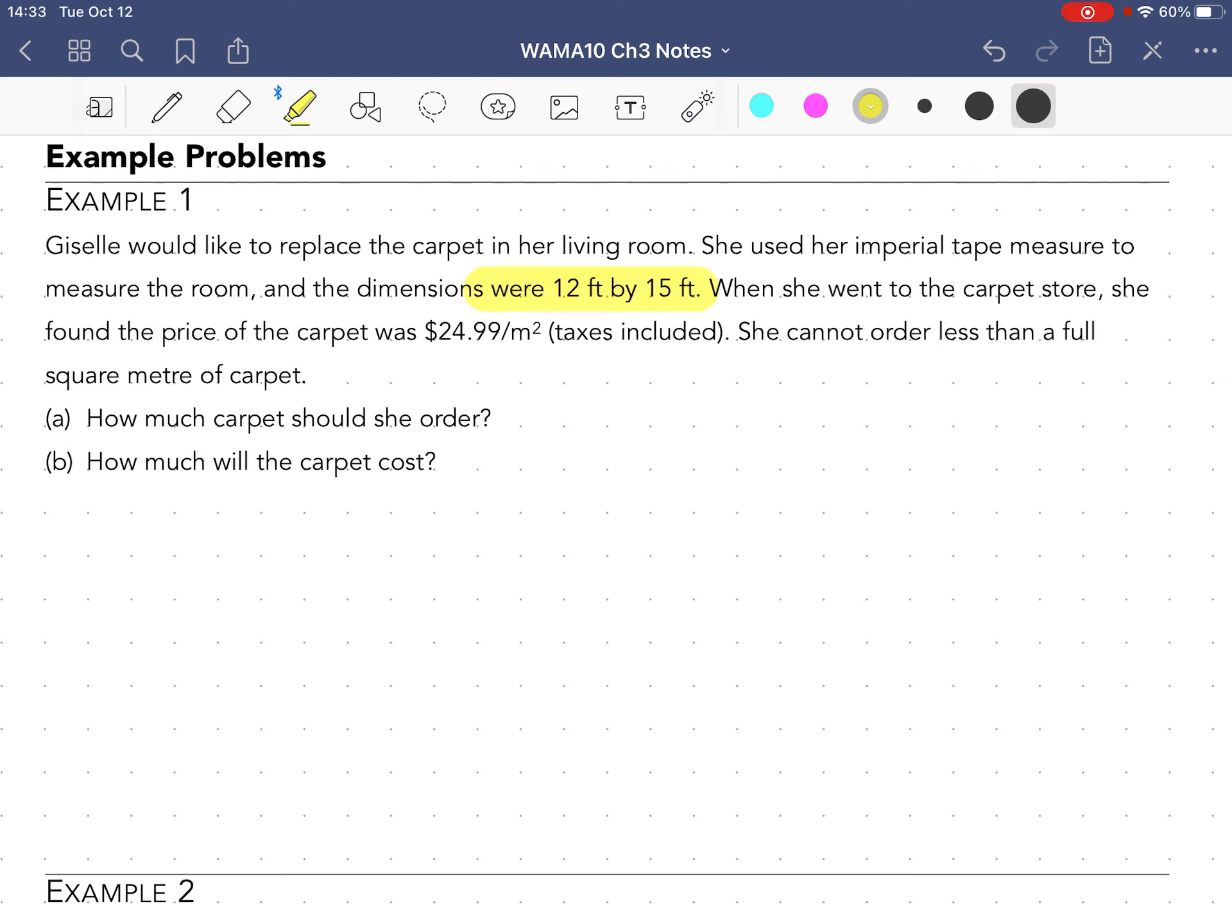So let's highlight that. She went to the carpet store, she saw the price of the carpet was $24.99 per square meter, taxes included. She cannot order less than a full square meter of carpet. So she can't order like 5.5, she has to order 5 or 6 or 7.